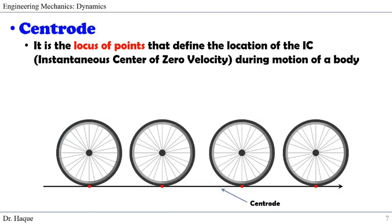Another simple example of Centrode is that of a bicycle wheel. As the wheel rotates and moves forward, the contact point with the ground acts as an IC point for the wheel. Thus, the straight line path — that means the ground — will be the Centrode for this bicycle wheel.